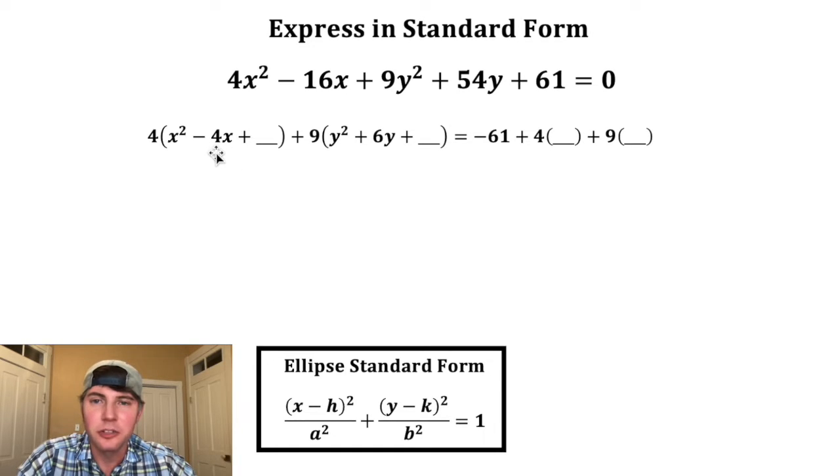So to find out what goes into the spaces, we divide this middle term by two. Negative four divided by two is negative two. And then we square it to give us four. And then to keep things balanced, we're also gonna put a four here. Then we take this middle term six, divide it by two and get three, square that and get nine. And then we also put a nine here.